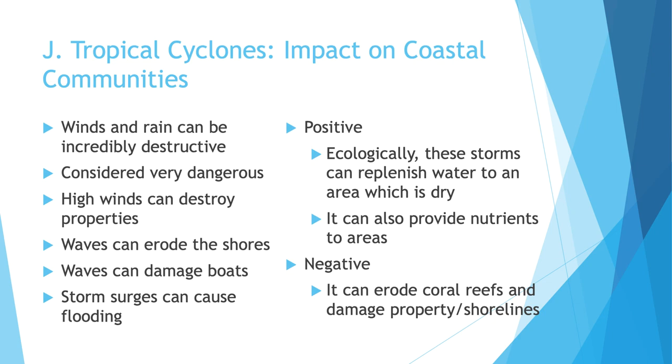With all this destruction comes some positive. Ecologically, the storms replenish water to an area which is dry or arid — the rains bring in a lot of fresh water and rehydrate dry areas. They also bring in nutrients to those areas. The wave action from these storms also erodes coastal reefs and damages properties and shorelines. So there are positives and negatives — mostly negatives, but there are some positives to tropical cyclones impacting coastal communities. That is it — you are done with chapter 7 and done with the Cambridge curriculum for this year. The rest of the time will be review until we get to that test.